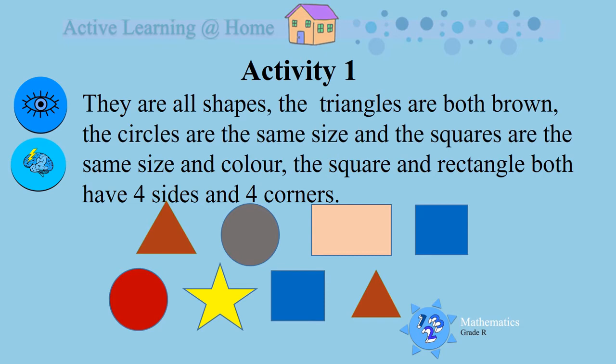Yes, they are similar because they are all shapes. The triangles are both brown. The circles are the same size and the squares are the same size and the same color. Square and rectangle both have four sides and four corners.